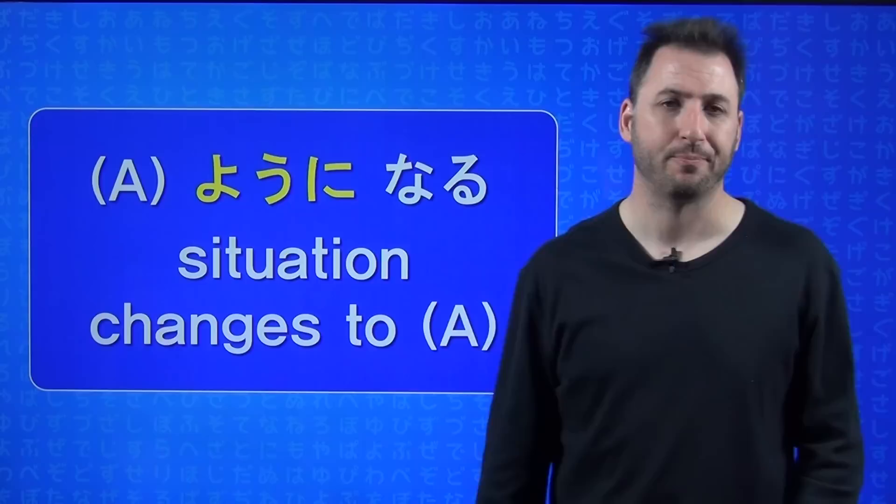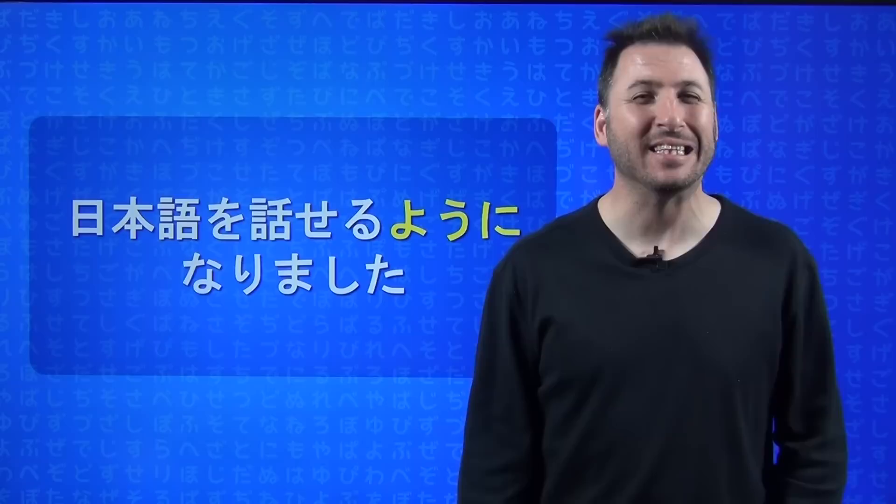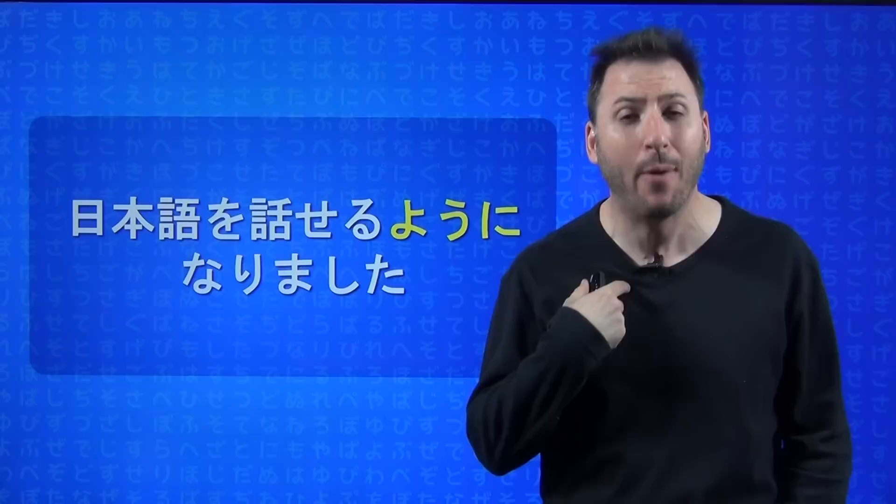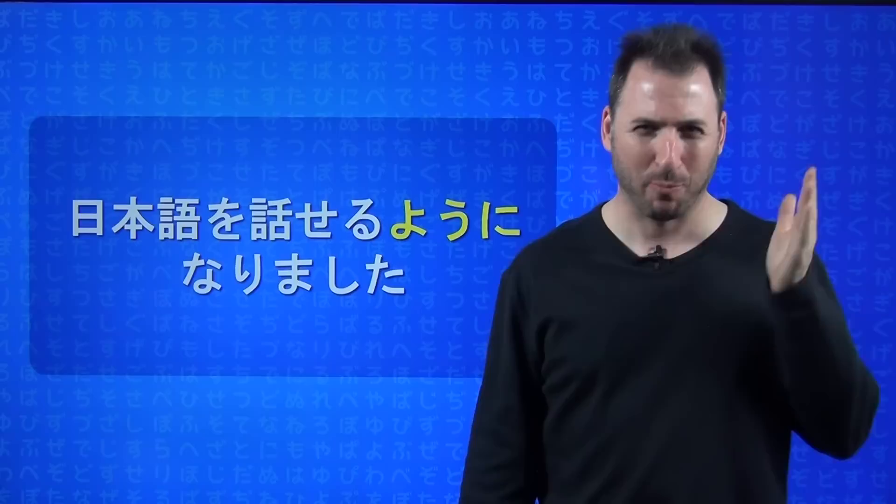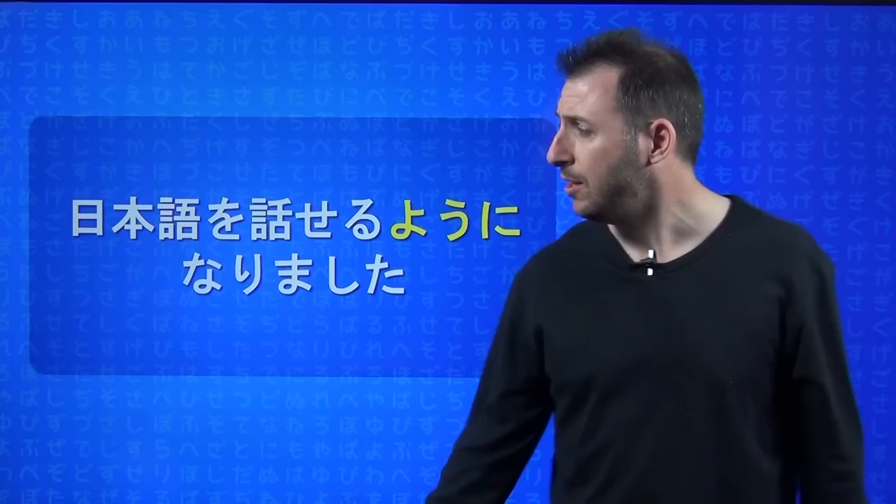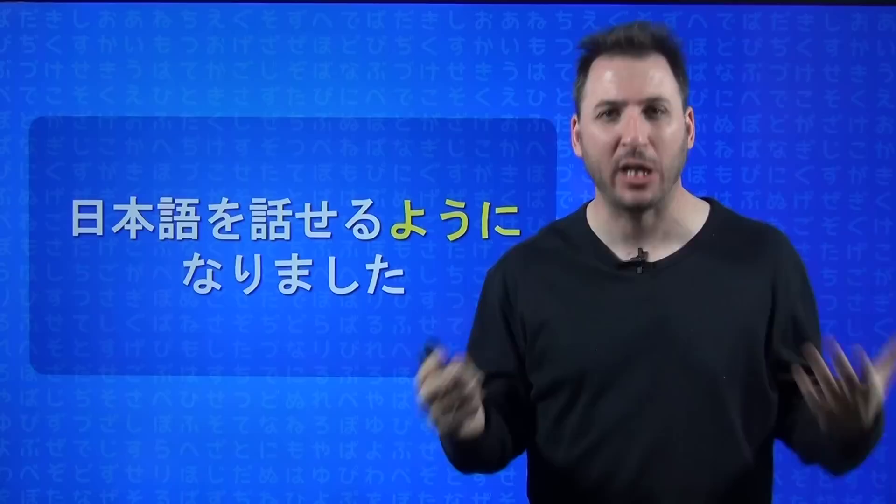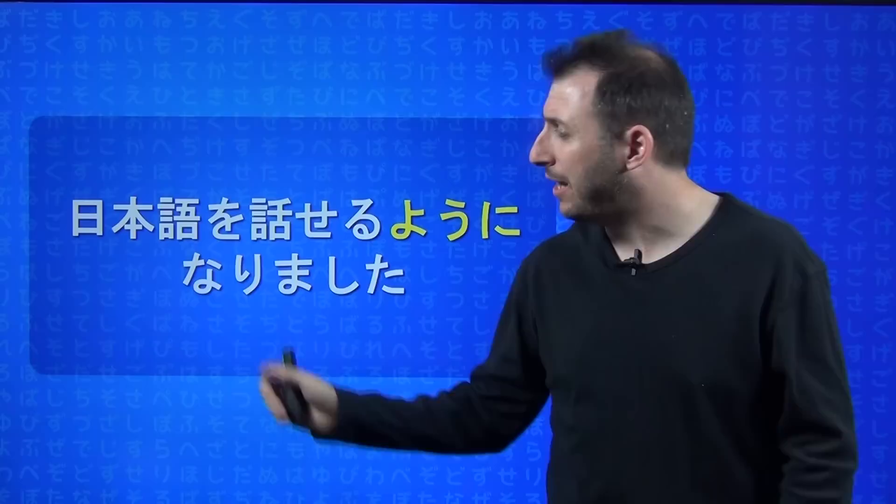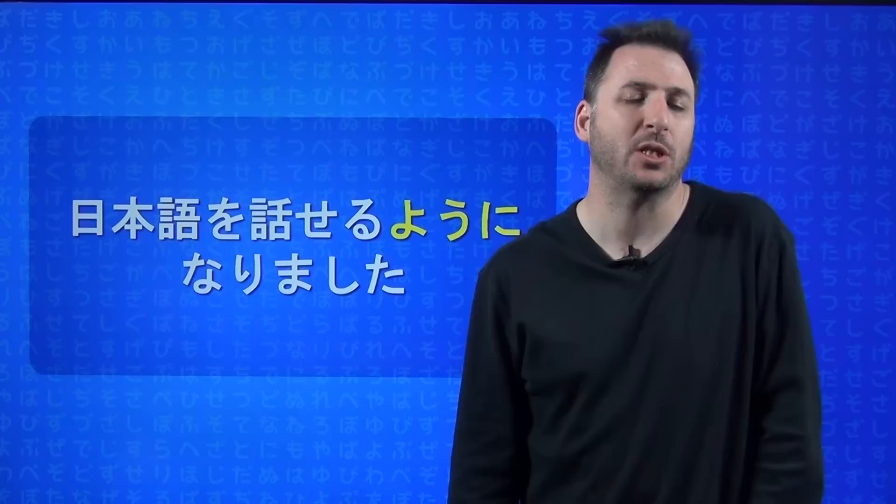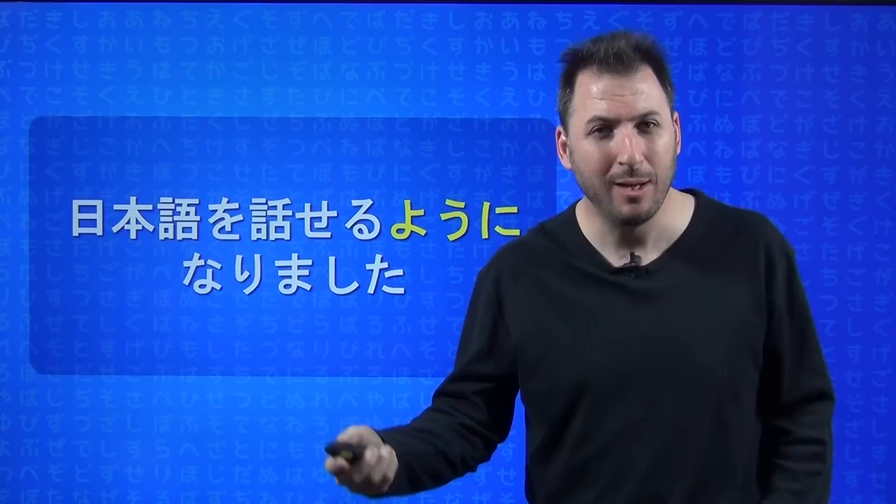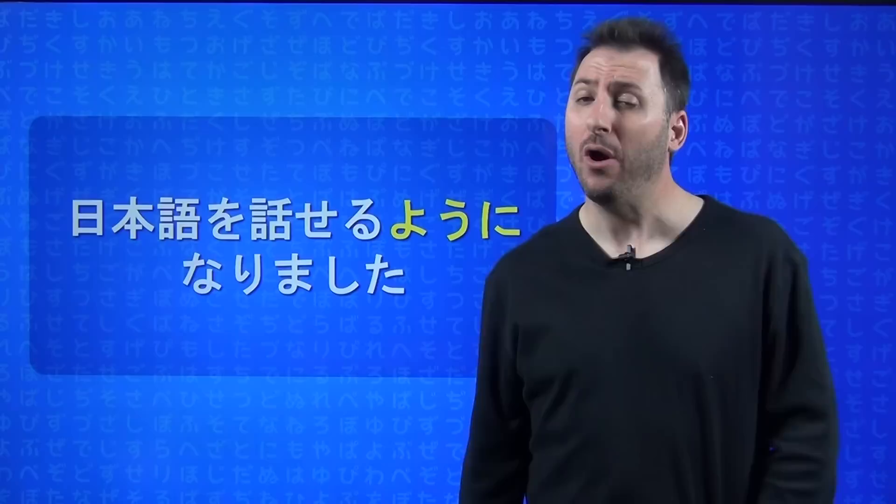Nihongo wo hanaseru yō ni narimashita. I couldn't even say it, I don't know what happened, but now I can. My situation has changed. I became able to speak Japanese. You must have yō ni naru here. That's how you say the state changed. I didn't used to be able to, but now I can. It doesn't mean when you translate it you say I didn't used to be able to, but it's implied. When we say I can speak Japanese now in English, it means you couldn't speak it before. Same thing here. Nihongo wo hanaseru yō ni narimashita - I have become able to speak Japanese.